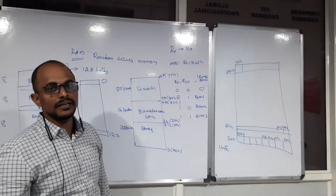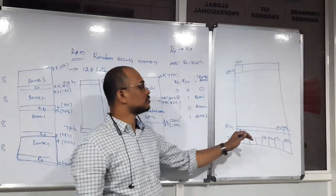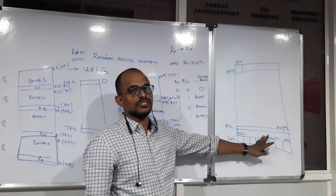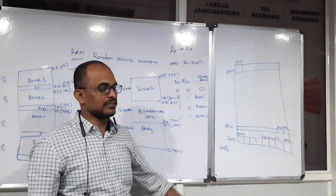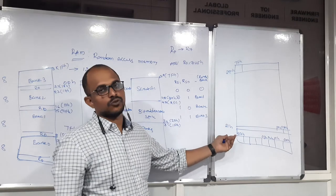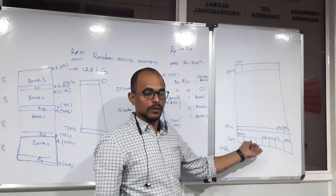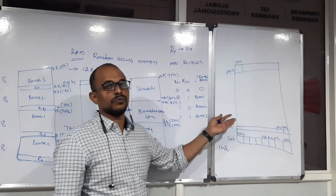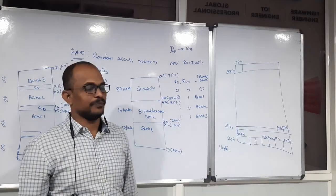The purpose of bit addressable space is very clear: if you are looking for single-bit storage, your microcontroller allows you to store data into these bit addressable space locations. If you need to use 1 byte, you can use the byte address such as 20H for 1-byte storage. But if you have only single-bit data, you need to work with the bit addressable space in RAM.